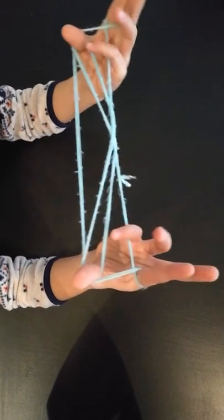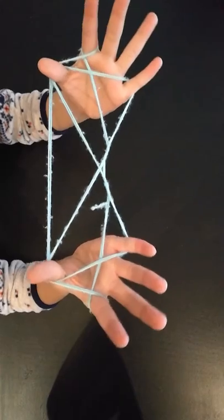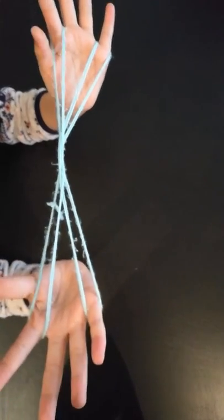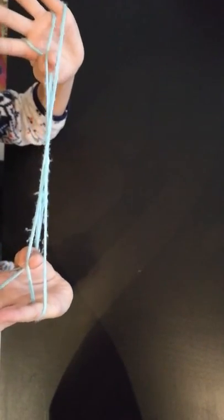Then you let go of your pinky strings, you go over the first and take the next like thumbs. Then you let go of the two thumb strings, go over those two and take the next one.